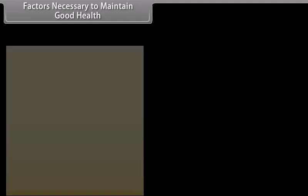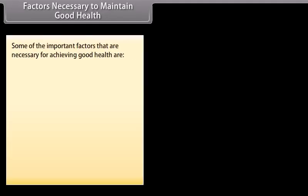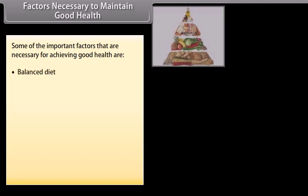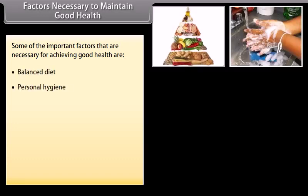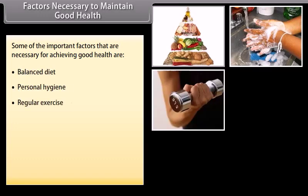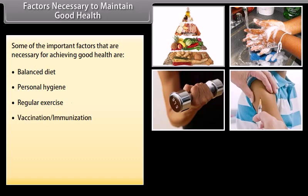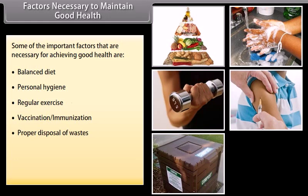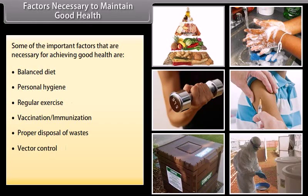Some of the important factors necessary for achieving good health are: balanced diet, personal hygiene, regular exercise, vaccination and immunization, proper disposal of wastes, vector control, and maintenance of hygienic food and water resources.